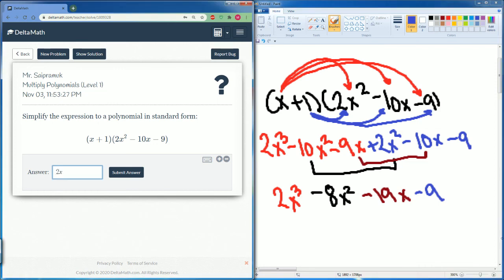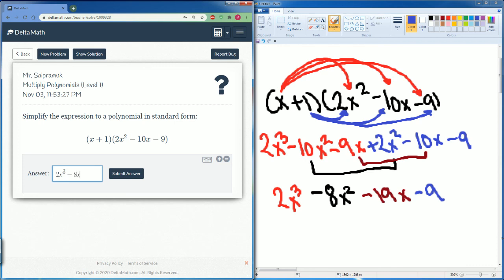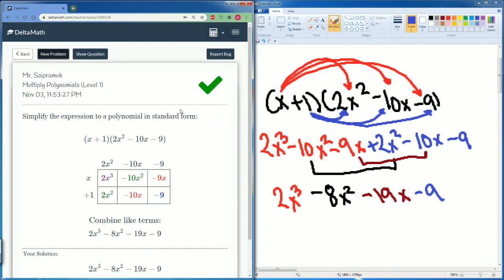So it is 2x to the power 3 minus 8x to the power 2 minus 19x minus 9. Let's submit our answer. Yes, we got it correct.